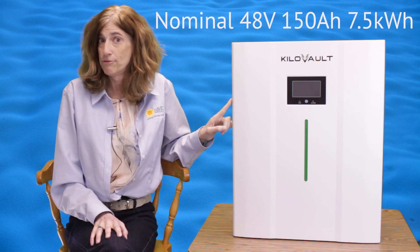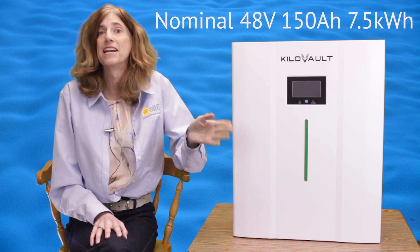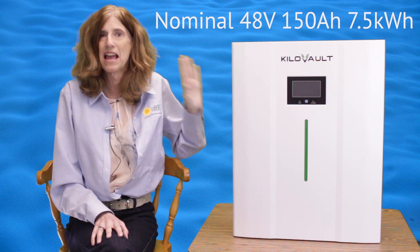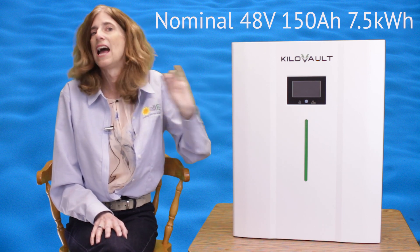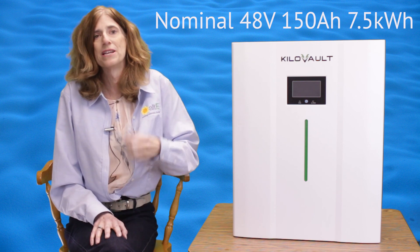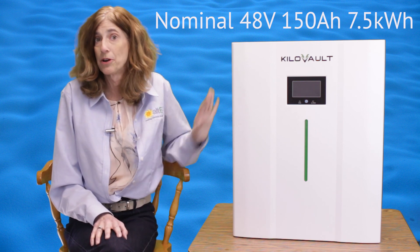Now it is 48 volts, so you don't have to take a bunch of 12 volt batteries and wire them in series. This is 48 volts already, 150 amp hours. It's 7.5 kilowatt-hour capacity.